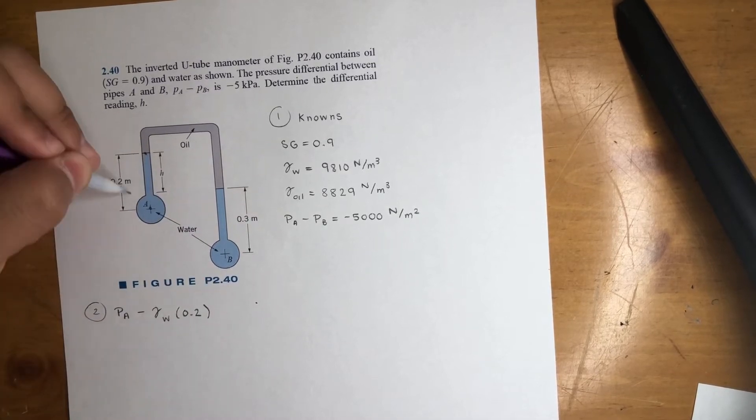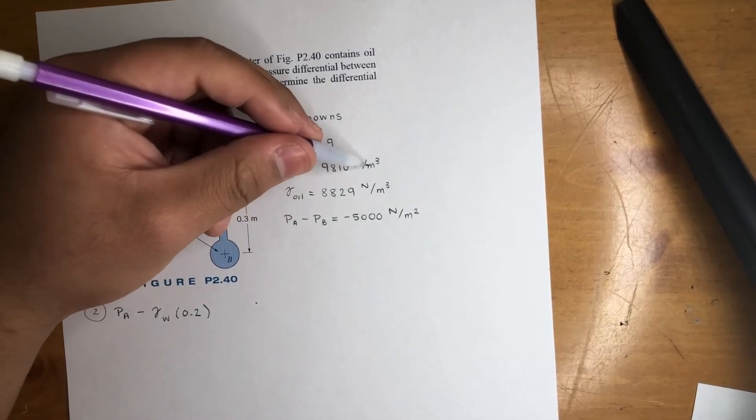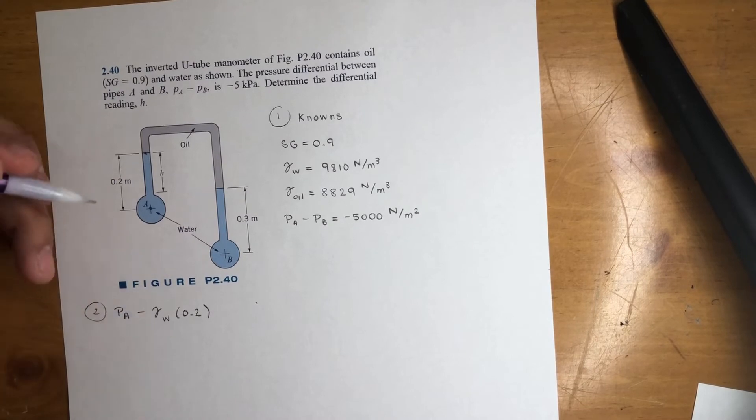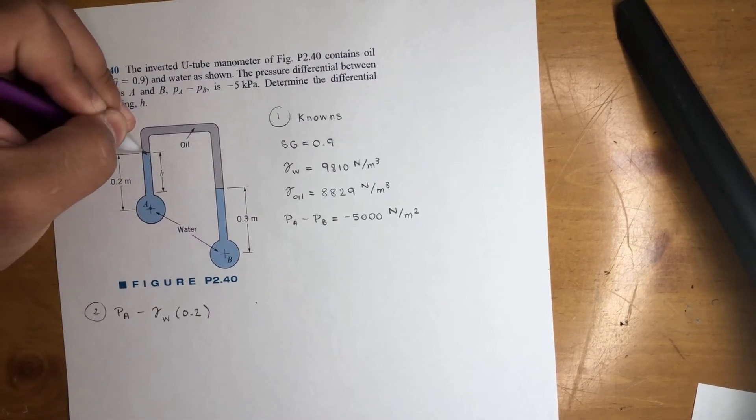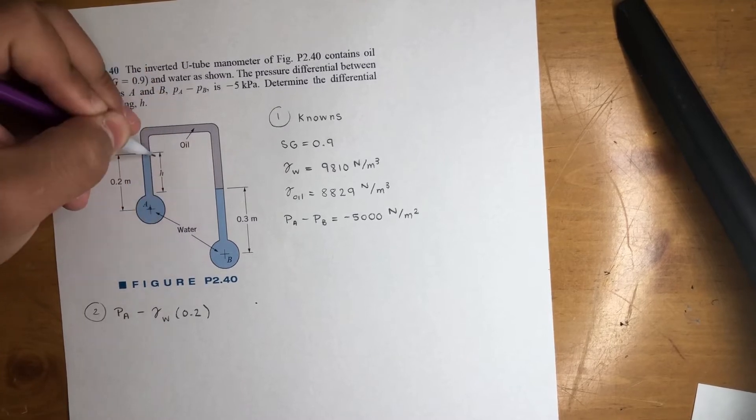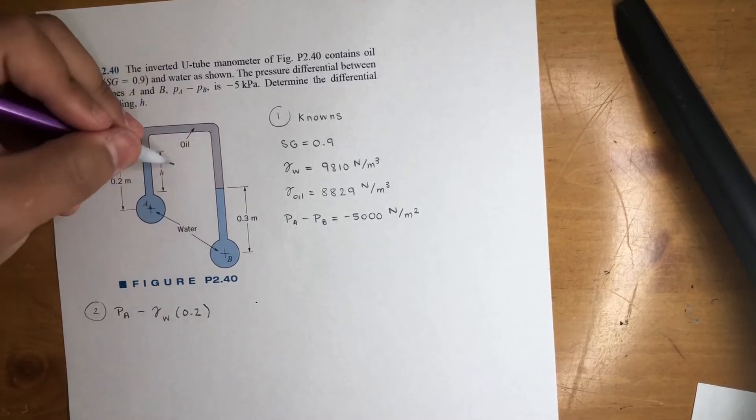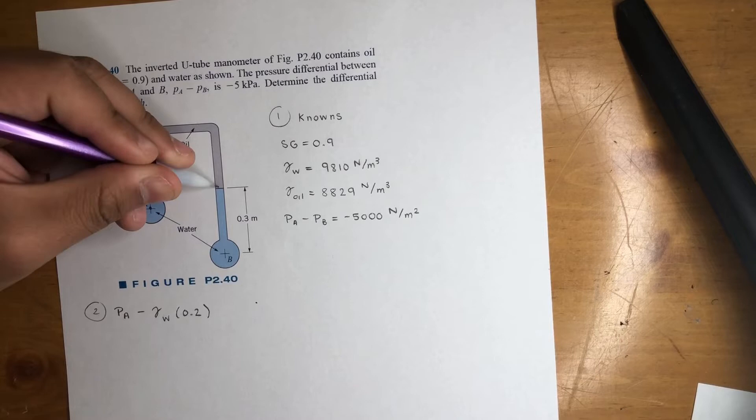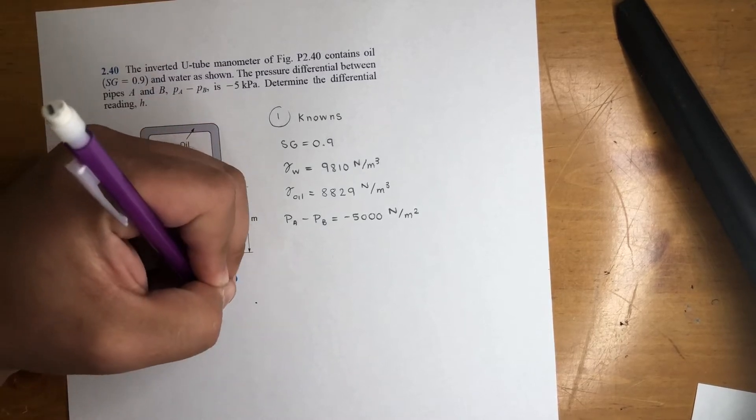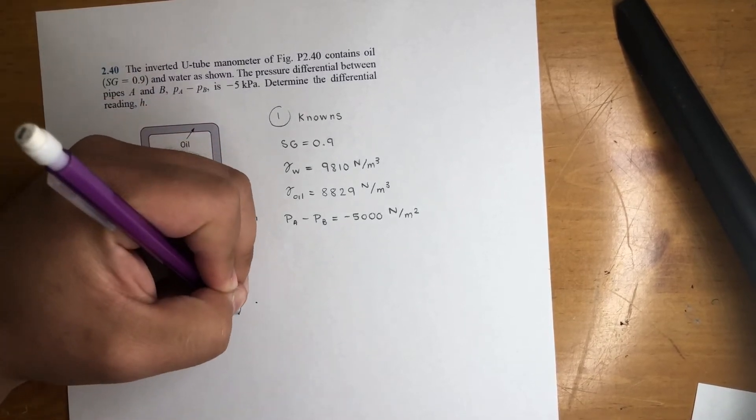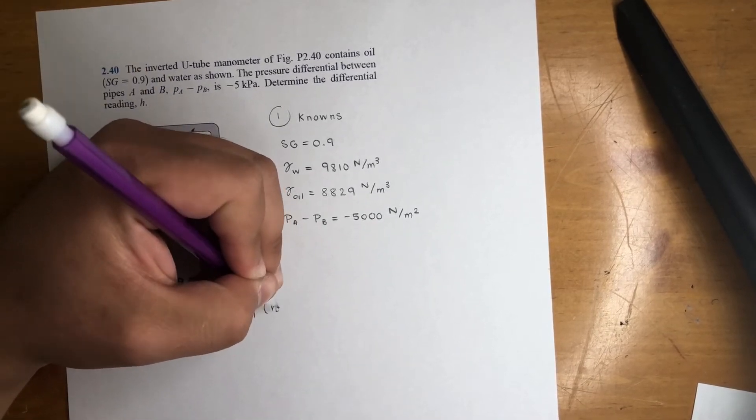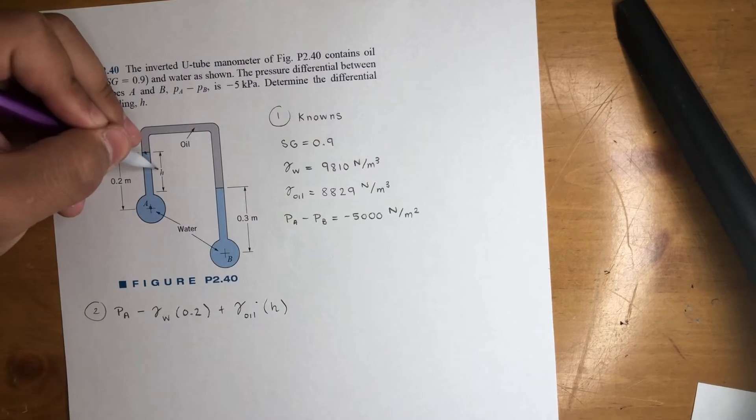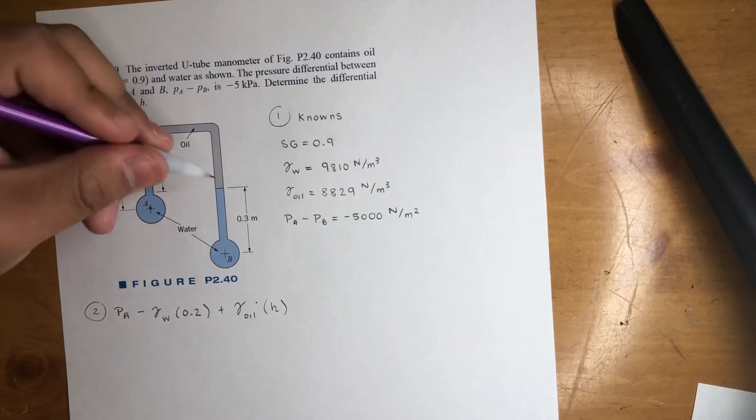And I'm not going to include the units, right? Meters, newton per meter cubed. That's going to give you a pressure unit. So we're at this point now. Now from this point to this point, that distance is H. So now we're going from here, going down. So that's a positive. That's gamma of oil times H, the height we're looking for pretty much.